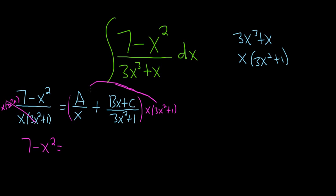And now distributing this over here to this piece, the x is canceled. So we get A parentheses 3x squared plus 1. That's what's left when we distribute that piece. And then distributing here we would get plus Bx plus C and the 3x squared plus 1 cancel so we're left with x.